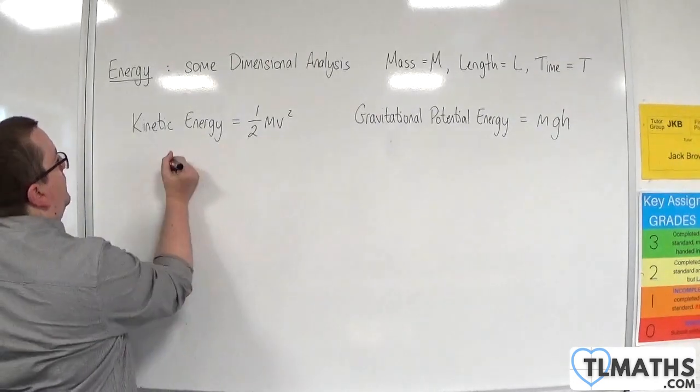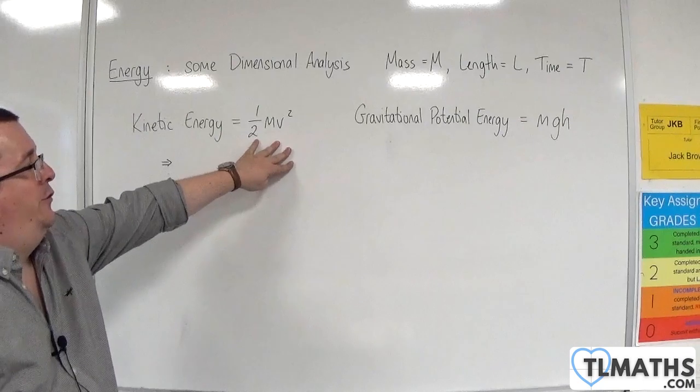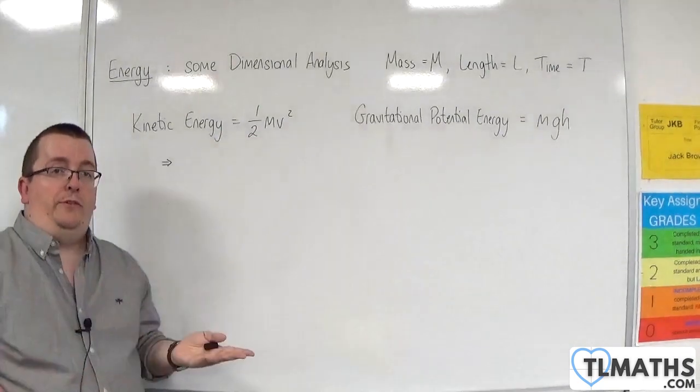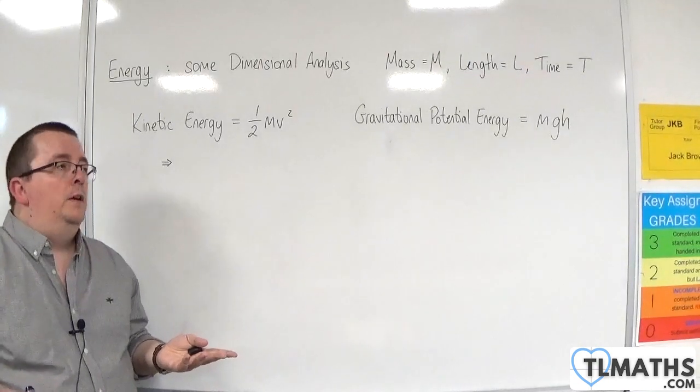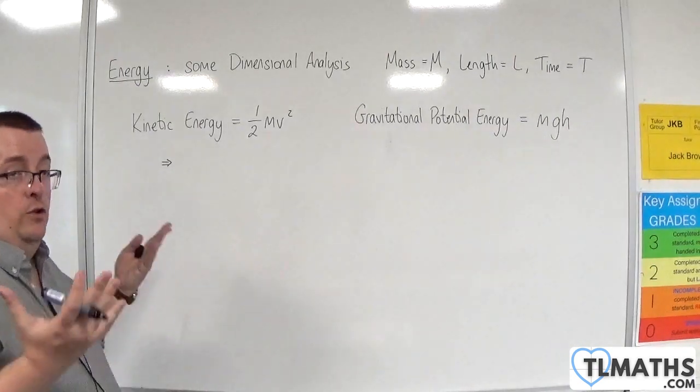So kinetic energy, we have one half mv squared. Now, with dimensional analysis, the half is just a constant multiplier. So it is dimensionless. So we can ignore that.